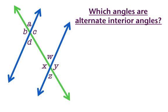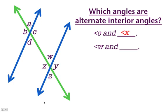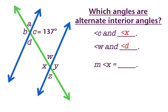Which angles are alternate interior angles? Let's say we have angle C. Angle C is on this parallel line, on that side of the transversal. So we're going to look at the other parallel line on the opposite side of the transversal — that is angle X. How about angle W? Angle W is on this parallel line, on this side of the transversal, so its alternate interior angle is on the other parallel line on the opposite side — that means it's angle D. So angle W and angle D are alternate interior angles. If angle C is 137 degrees, then angle X is also 137 degrees, since they are alternate interior angles and therefore congruent.